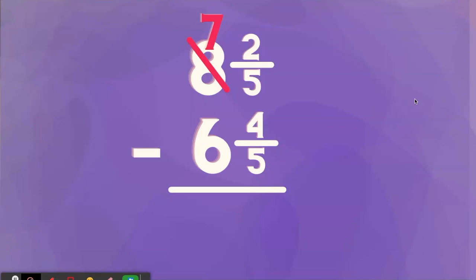We'll go next door. We'll borrow from the eight, make it a seven. And we're going to borrow one whole from there. But our problem is we don't have enough fifths. We only have two-fifths. We need more. So we're going to trade our one whole in for fifths.